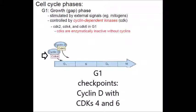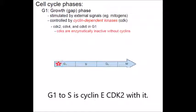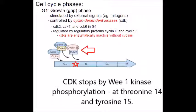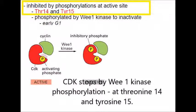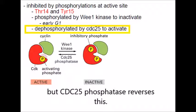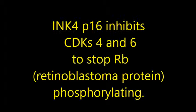G1 checkpoint: cyclin D with CDK 4 and 6. G1 to S is cyclin E with CDK 2. CDK is stopped by Wee1 kinase phosphorylation at residues 14 and 15. CDC25 phosphatase dephosphorylates those sites to give CDK reactivation. INK4: P16 inhibits CDK 4 and 6.